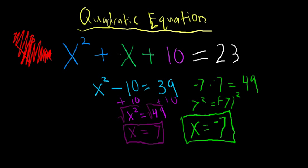But adding a negative number is not the same as adding a positive number. This middle x isn't squared, so we're just adding it — it's just like adding a number. Adding a positive number is not the same as adding a negative number, so it gets more tricky.